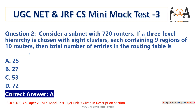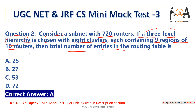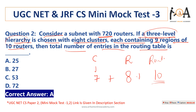Question number two: consider a subnet with 720 routers. If a three-level hierarchy is chosen with eight clusters, each containing nine regions of 10 routers, then what is the total number of entries in the routing table? In this three-level hierarchy — clusters, regions, routers — 10 entries are needed for routers, 8 entries for other regions, and 7 entries for other clusters. So 7 + 8 + 10 = 25.